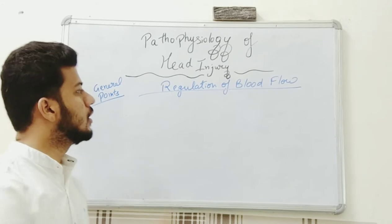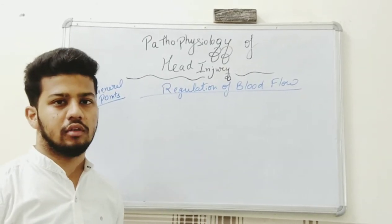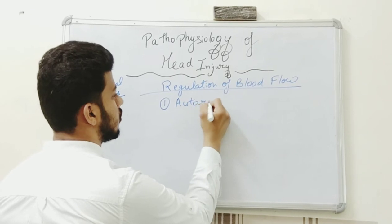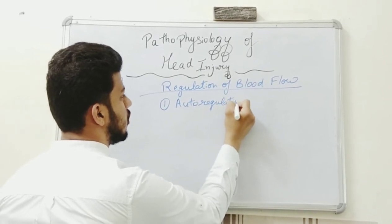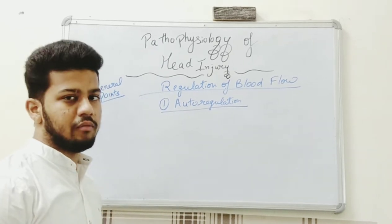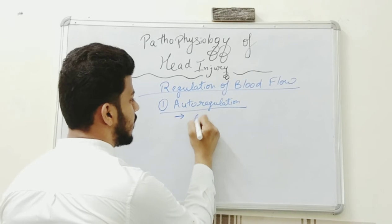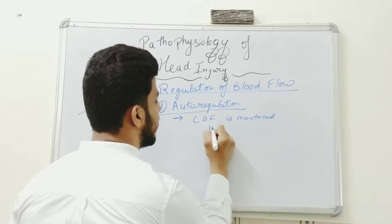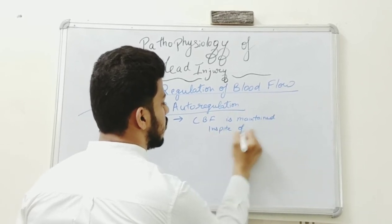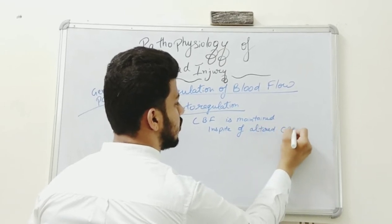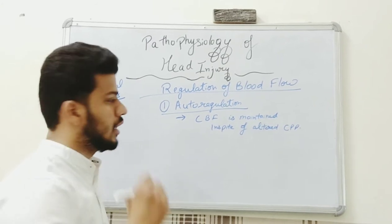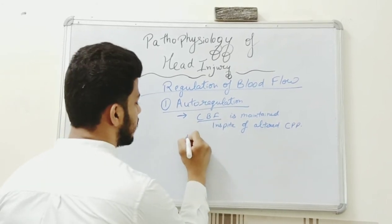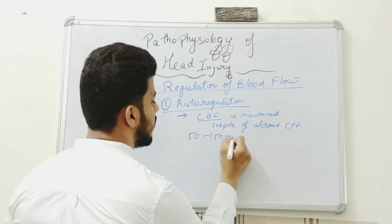The first and most important factor in regulation of cerebral blood flow is cerebral autoregulation. In this, cerebral blood flow is maintained in spite of altered cerebral perfusion pressure. The range for cerebral blood flow autoregulation is 50 to 150 mmHg for cerebral perfusion pressure.